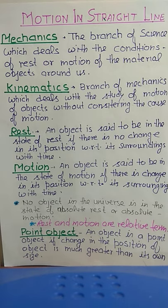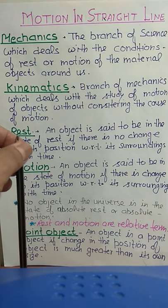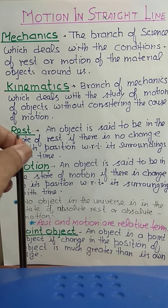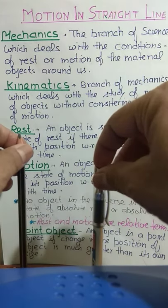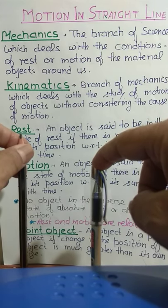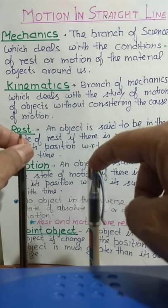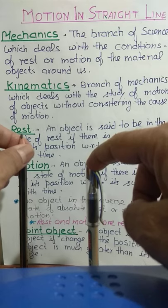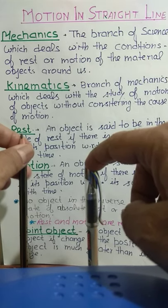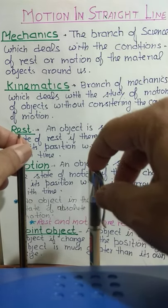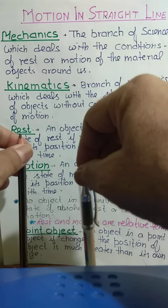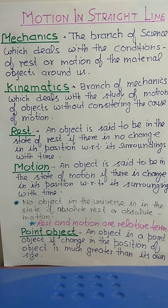Now I am going to discuss the state of rest and state of motion. For the state of rest, take a pencil as the reference point (origin) and a pen as the object. If there is no change in the position of the pen with respect to the pencil, then the pen is said to be in the state of rest. Therefore, an object is said to be in the state of rest if there is no change in its position with respect to its surroundings with time.